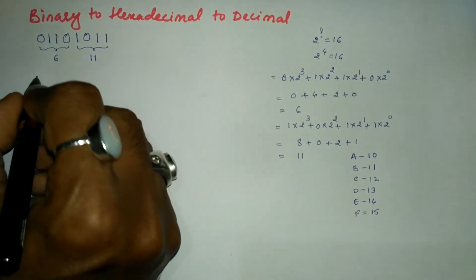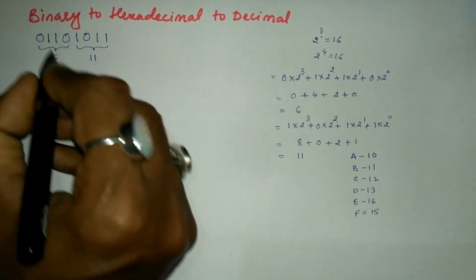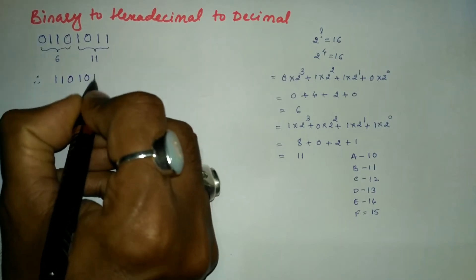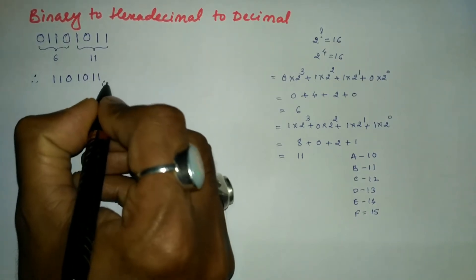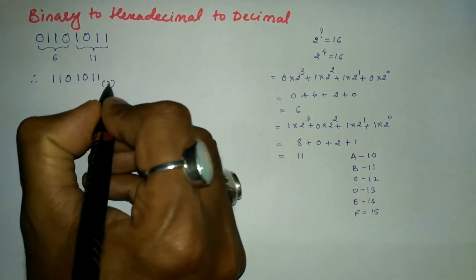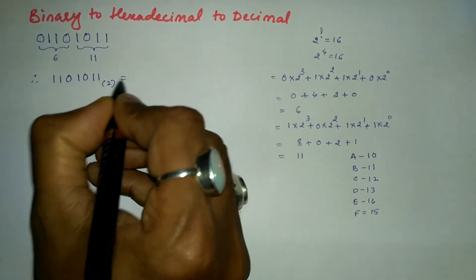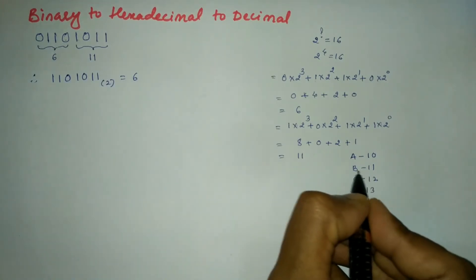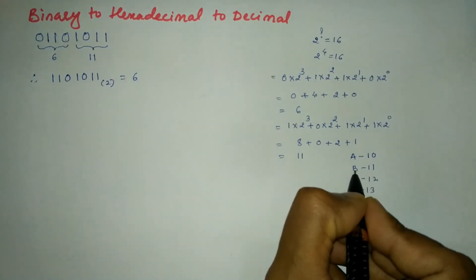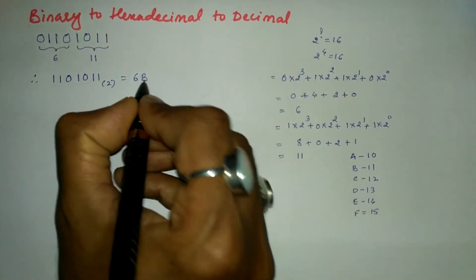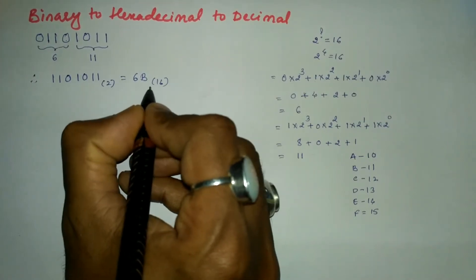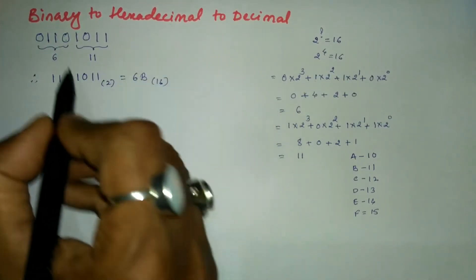Therefore, 1101011 in base 2 is equal to 6B in base 16.